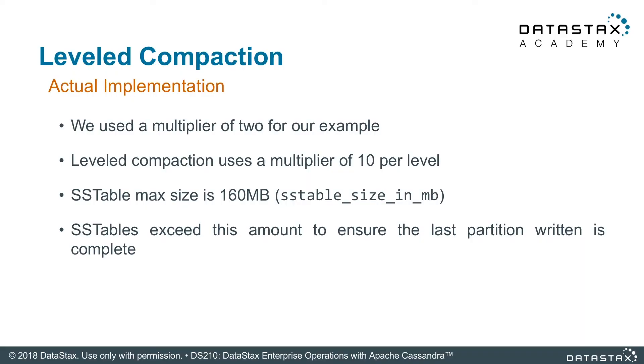This whole process is very intensive. As we keep writing data, it gets promoted into the right levels, moving down from level one to level two to level three to level four. The good thing is we know where that data is going to be, and as it gets promoted further, it gets written less. We used a multiplier of two in the example, but the real world default is 10. The SSTable max size is 160 megabytes by default. You can change that, but you better not unless you know exactly what you're doing, because you could really mess things up quickly - it will get really crazy fast because of how the levels work, eating up a lot of disk IO.